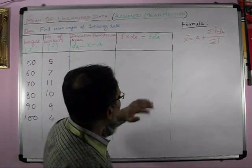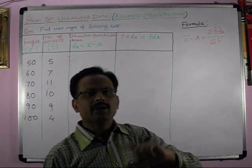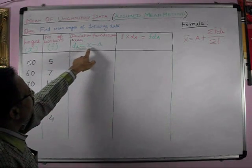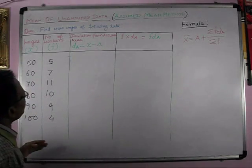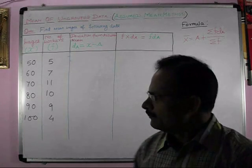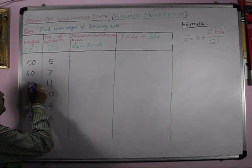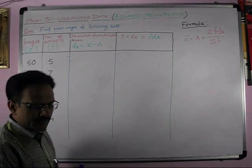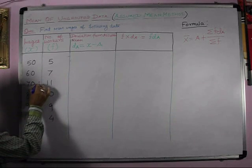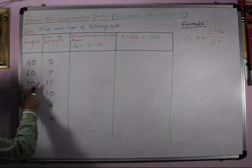We have DA, deviation from assumed mean. So, first of all, we have to find out the deviation of assumed mean. DA, deviation from assumed mean, DA is equal to X minus A. Here, what is A? A is the assumed mean. From where it will come? It will come from X. It would be better if you take a middle value of X as A. We are taking 70 as assumed mean.